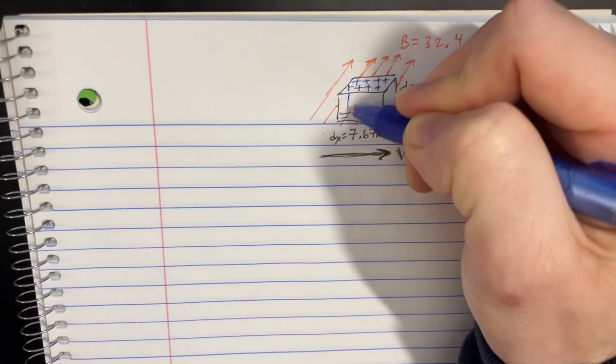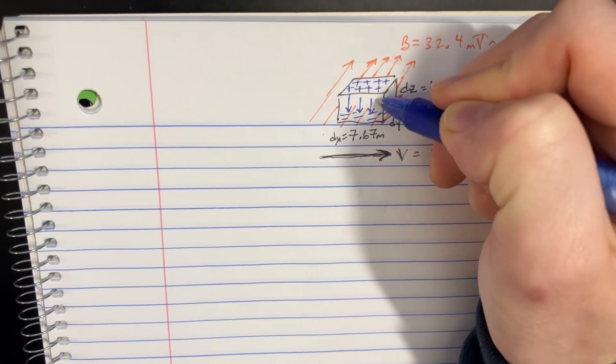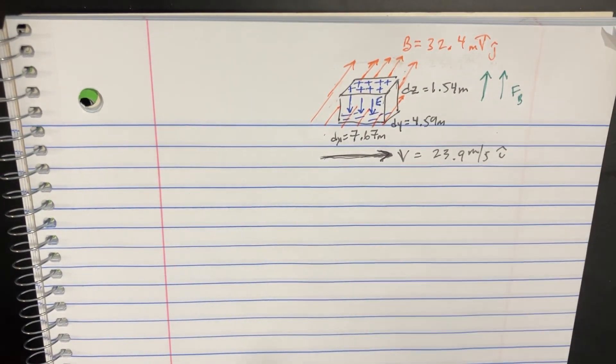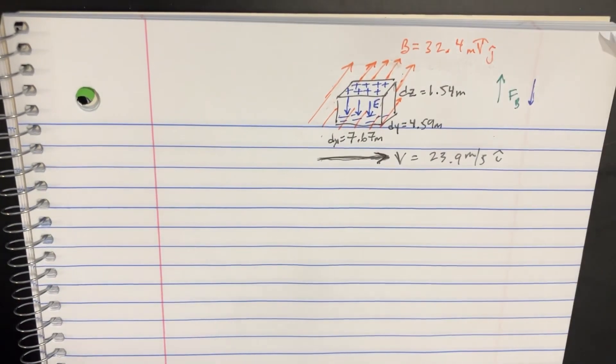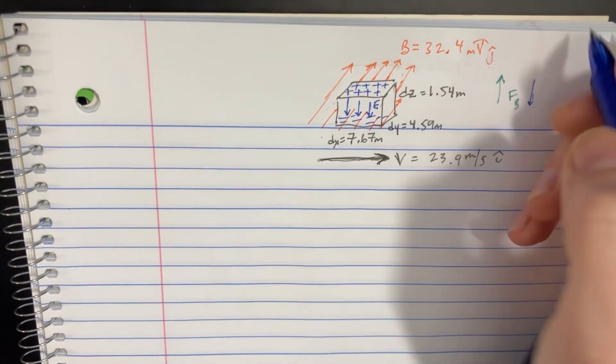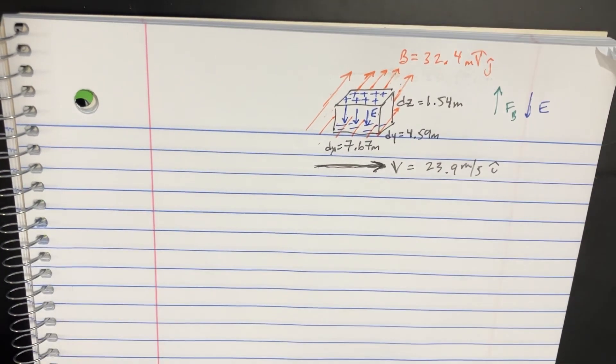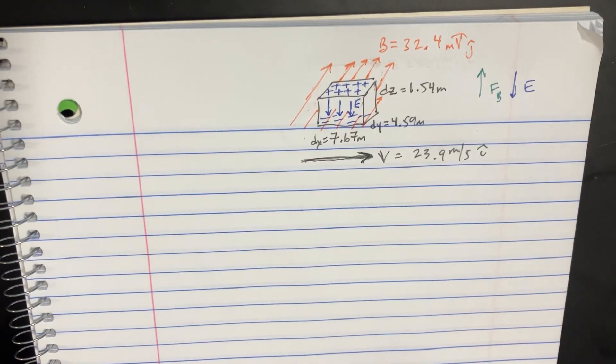So that's going to give us this potential difference in here, which is the electric field. And because the electric field is in this direction, and let's just do one arrow here, we could see how the force would be up and the electric field would be down. And so now we're going to have these two opposing forces.